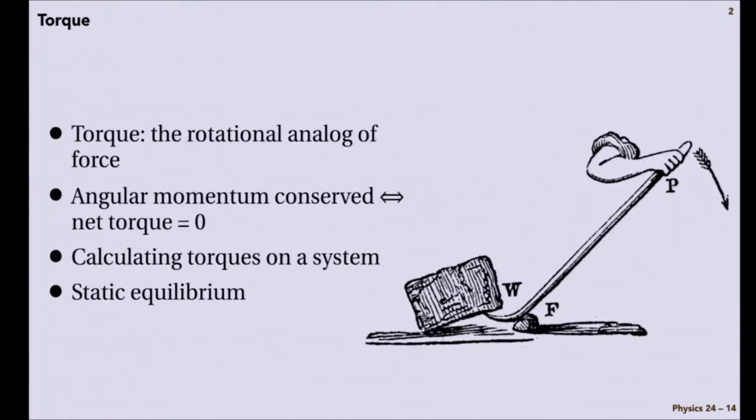Torque is the rotational analog of force. What we will see is that if angular momentum is conserved, that means there's no external torque, in the same way that if momentum is conserved, that means there's no external force.